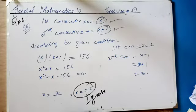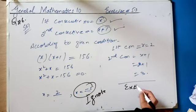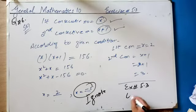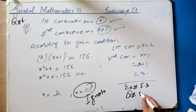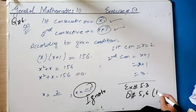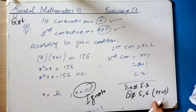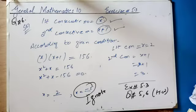If there is any problem, you will discuss with me. Note down in your diary: Exercise 5.3, question number 5 and 6 is homework. Do it in your notebook. And practice questions one to six — all are done now, so do practice on your rough register. Okay? JazakAllah Khair.